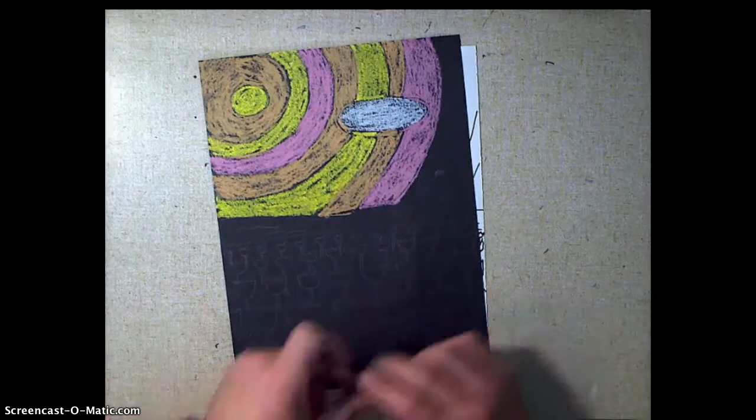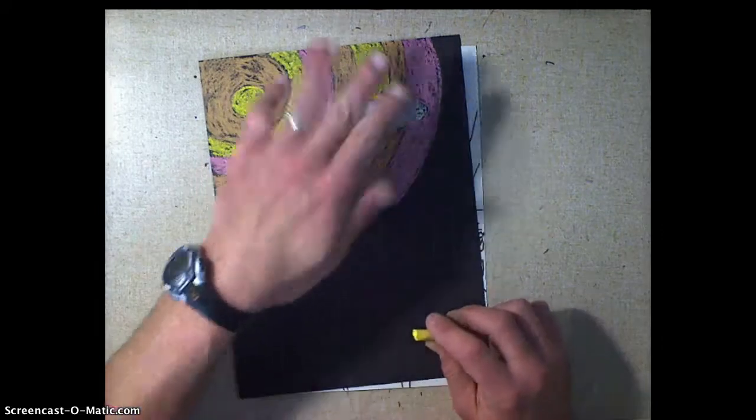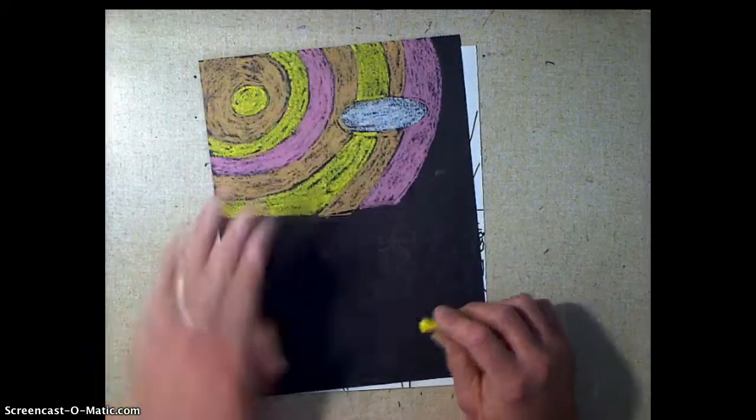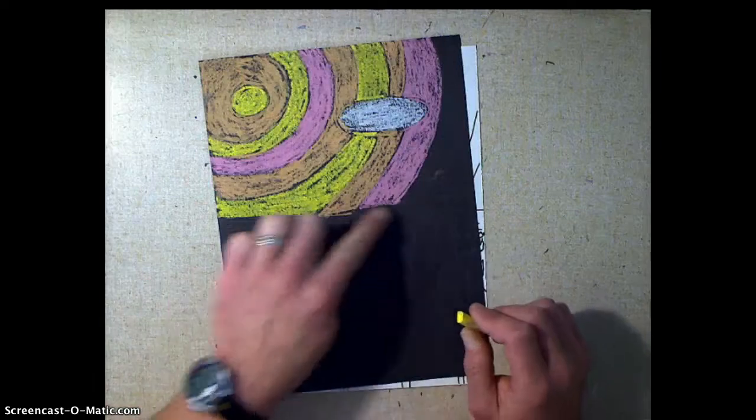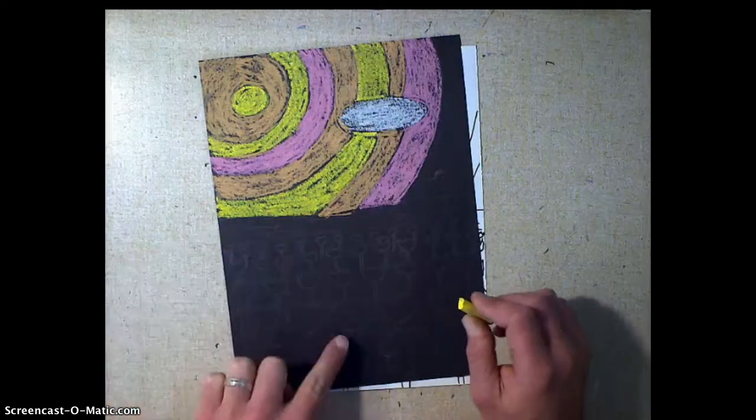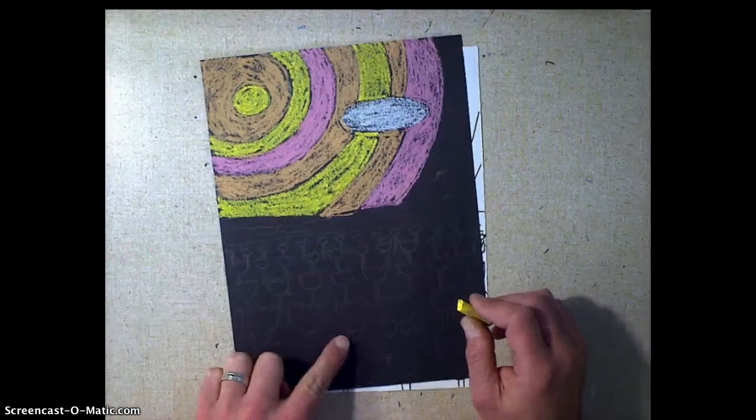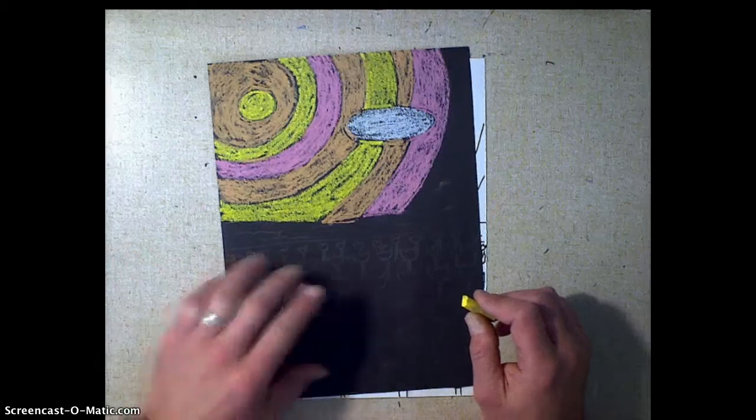So when you're filling in your sky, remember your sky is going to be warm colors, and there's my cloud. And then down here I have water in here, this is going to be the lake, and then I have cool colors for my tulips and my grass down here.